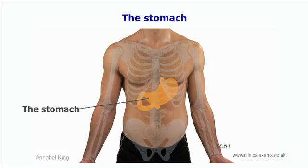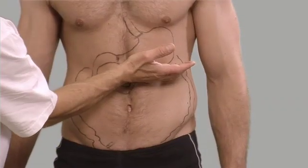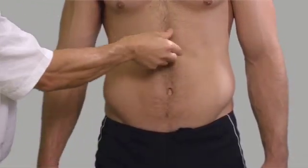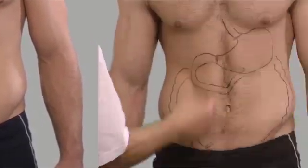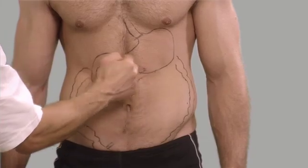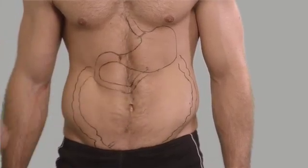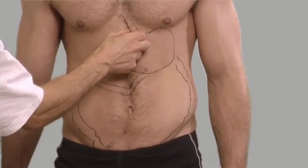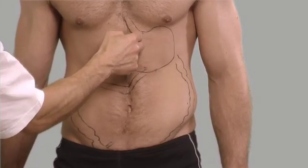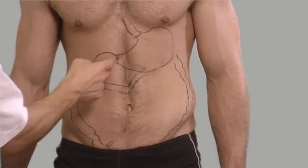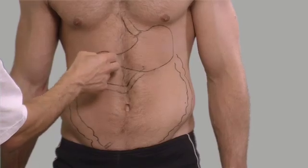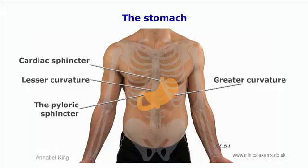The stomach is not normally palpable unless significantly full, in which case it will descend below the left costal margin. It is a J-shaped structure with its greater curvature convex to the left and the lesser curvature concave to the right. The cardiac sphincter is about 2.5 centimeters to the left of the sternum at the level of the seventh costal cartilage. The pyloric sphincter is about 1.5 centimeters to the right of the midline at the transpyloric plane.